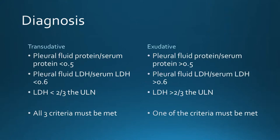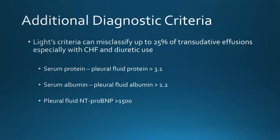There are additional criteria because about 25% of pleural effusions that appear exudative may actually be transudative — mainly in patients with CHF on diuretics. You can use serum protein minus pleural fluid protein if that's greater than 3.1, or more commonly serum albumin minus pleural fluid albumin if that's greater than 1.2, to confirm a true transudative effusion. Pleural fluid pro-BNP can also be used, though it's harder to obtain.